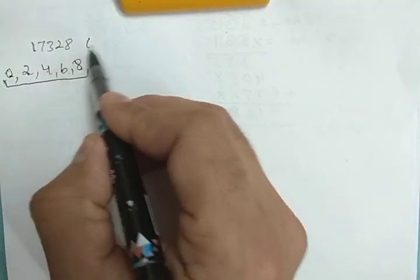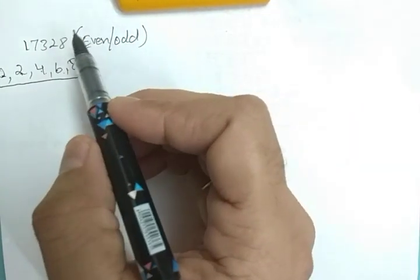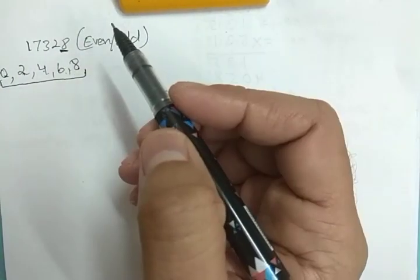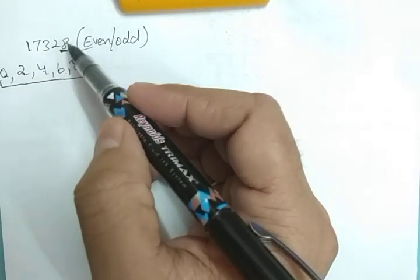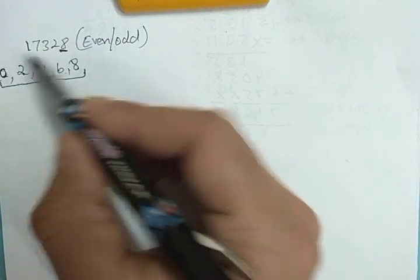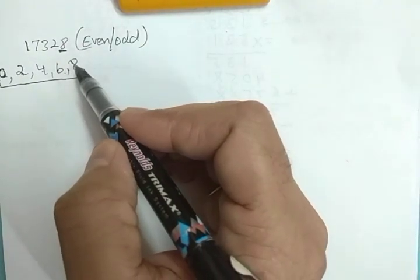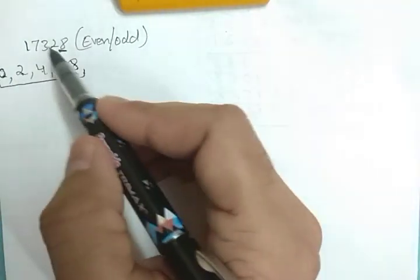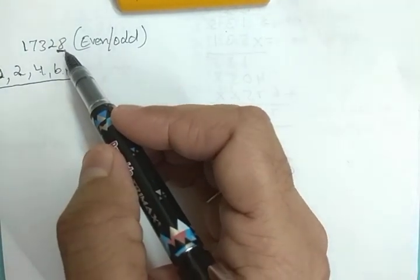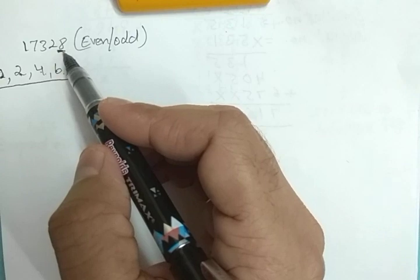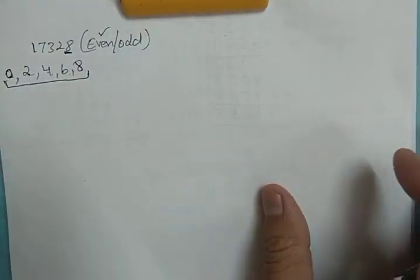Now, to find out whether a number is even or odd, you just check the digit at the ones place. For 17328, what is the digit at the ones place? It is 8. Now see whether 8 is in those five numbers — yes, 8 is a multiple of 2. So this is an even number. You just check whether the digit at the ones place is a multiple of 2.